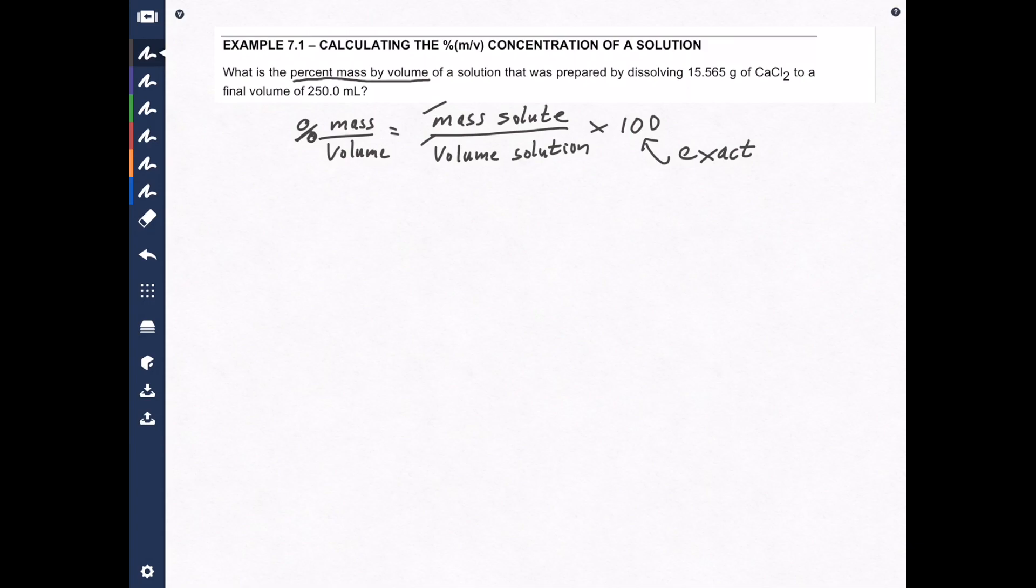All right, so we're going to be dissolving 15.565 grams of calcium chloride to a final volume of 250.0 milliliters. Now it doesn't tell us what the solvent is, but we're going to assume it's water. We take this many grams of calcium chloride, dissolve it into water, and the total volume of the solution will be that at the end of all this.